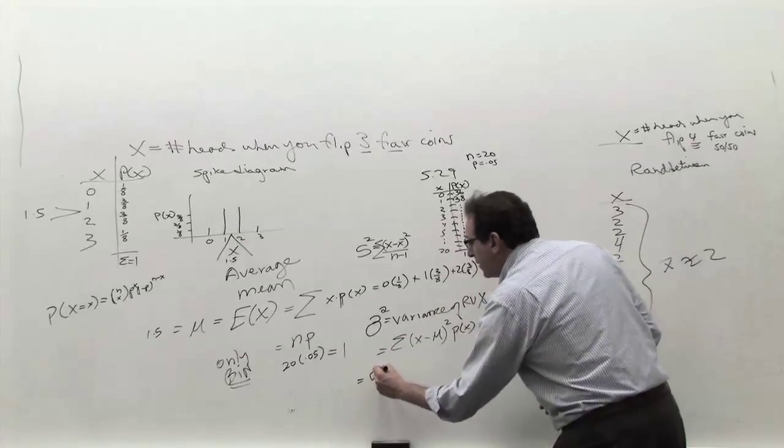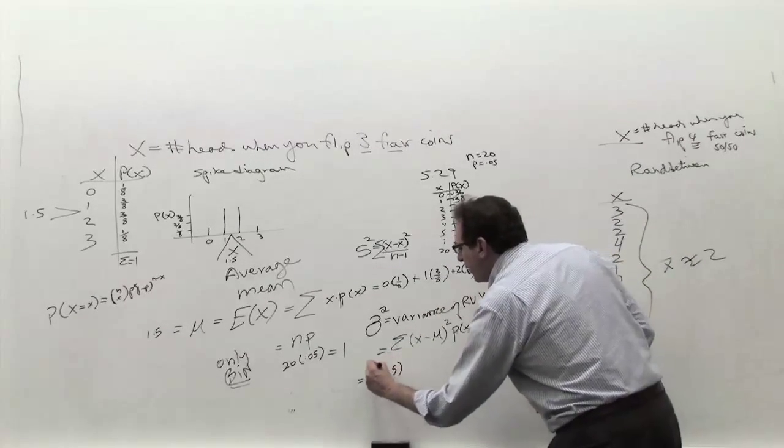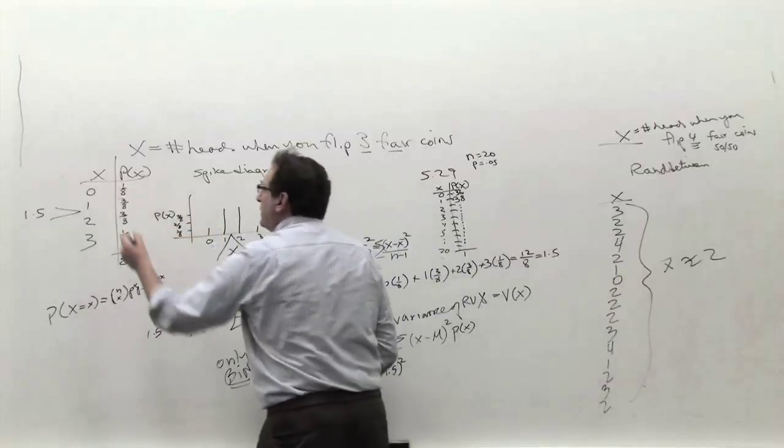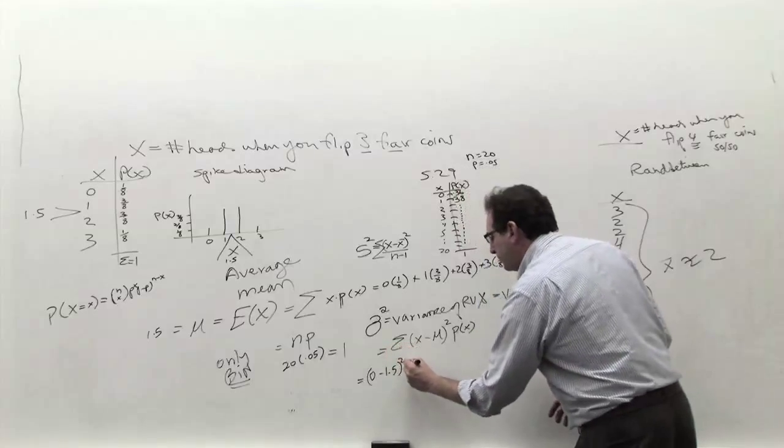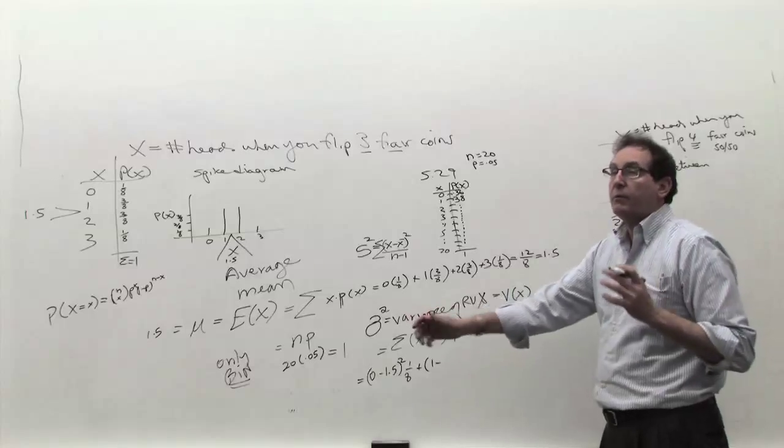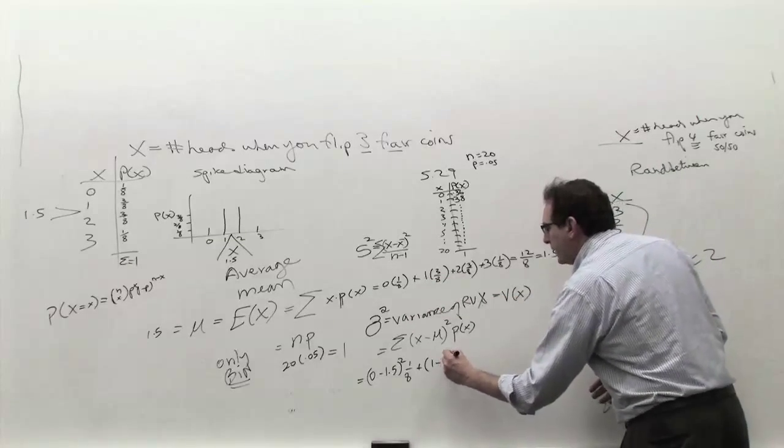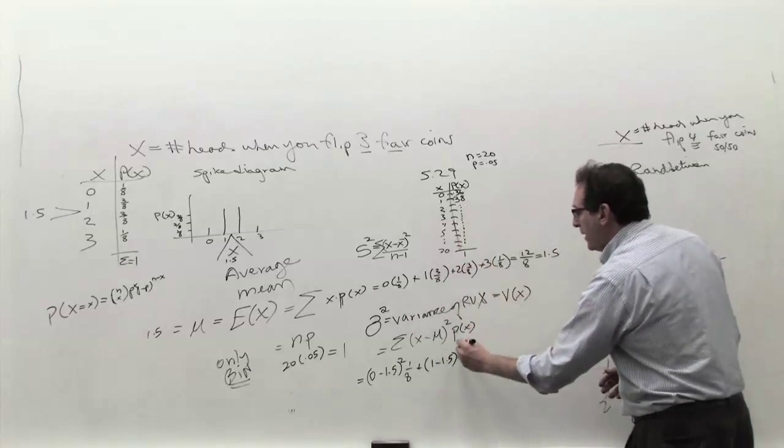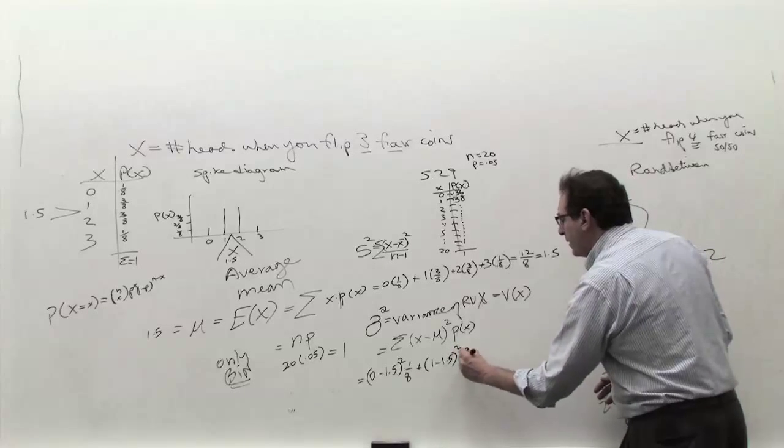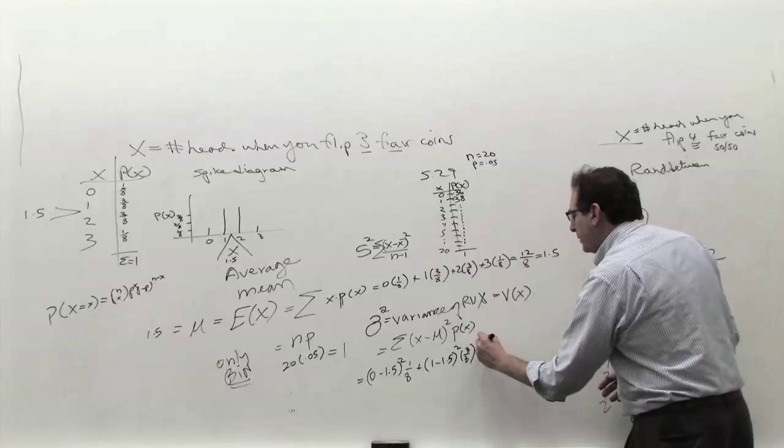Let's do it for this set of numbers. Well, the first X is zero minus the average of 1.5. You square that. And how often does zero show up? 12% of the time, roughly, so 1 out of 8. What's the next possibility? X equals 1 minus how far is that from the same average, 1.5. Because the average is 1.5 for the whole example. You square that and multiply that by 3 out of 8.